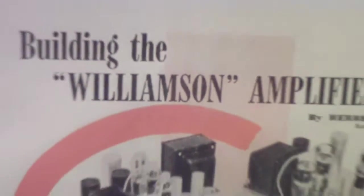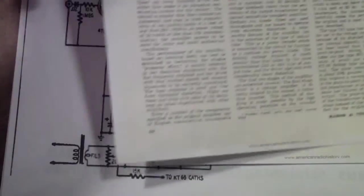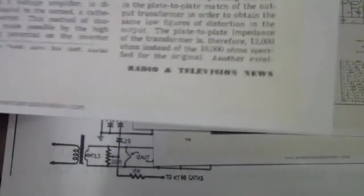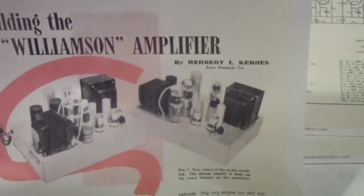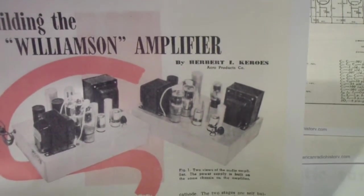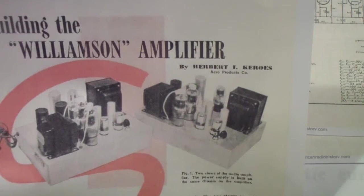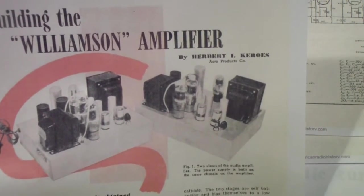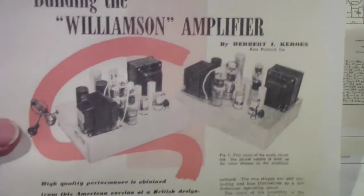Once again, the article is called Building the Williamson Amplifier. And the author of this article, Keroes, is actually one of the authors of the ultralinear article that we'll be discussing in part 2.